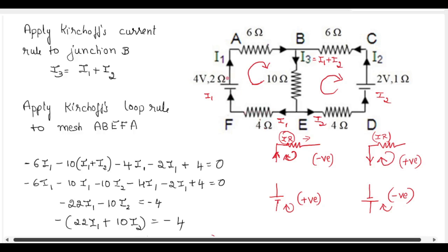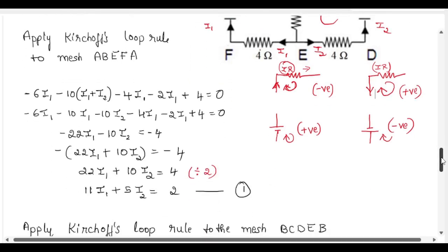There is an internal resistance of 2 ohms, and since the direction is the same, we get minus 2I1. The direction moves from negative to positive terminal of the battery, so plus 4, equal to 0. On solving, we get minus 22I1 minus 10I2 equals minus 4.